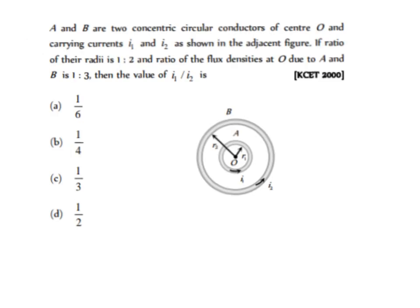A and B are two concentric circular conductors of center O, carrying currents I1 and I2 as shown in the figure. If the ratio of their radii is 1:2, and the ratio of the flux density at O due to A and B is 1:3, then find the ratio of the currents.